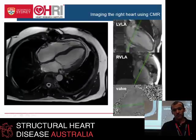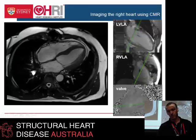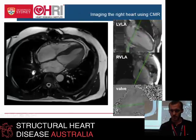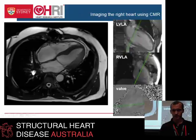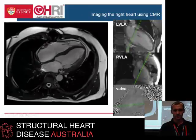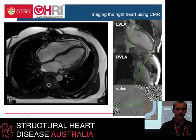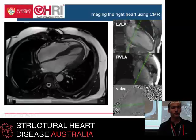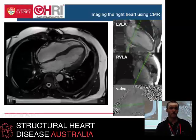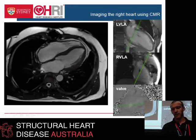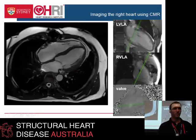So here's a four-chamber view. We planned it off those three views. That should be lined up straight, banged down through the valve and through the apex for both the RVLA and the LVLA. As was mentioned, it's possible to get a very distorted four-chamber view if you don't get the angulation right, and the valve view is really important for that - getting it right at the level of the valve is really critical.